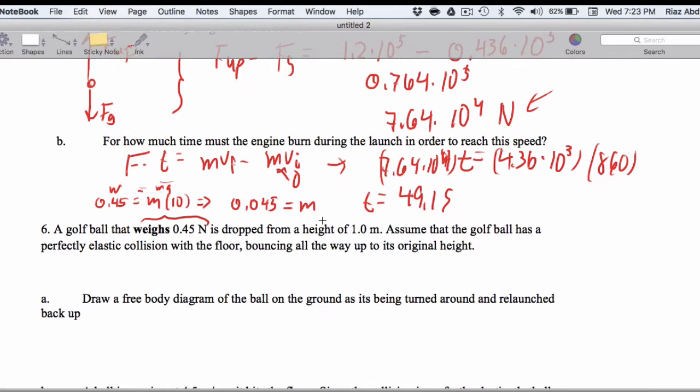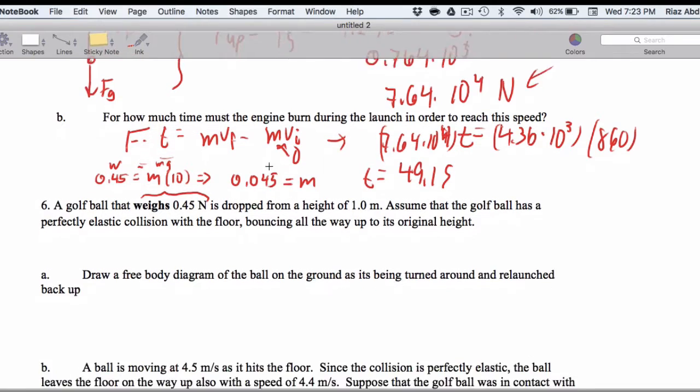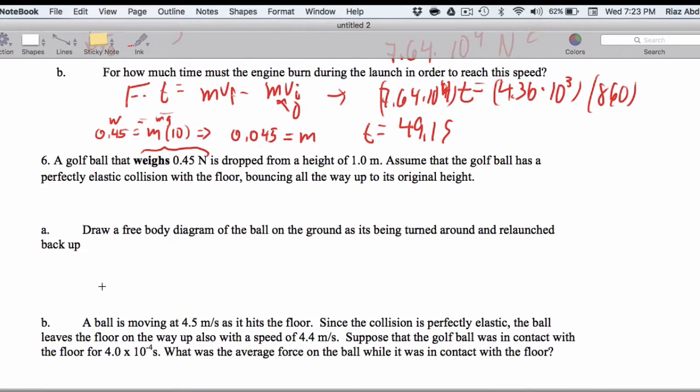So it says, assume the golf ball has a perfectly elastic collision with the floor, bouncing all the way up to its original height. So a free body diagram of the ball smushed on the floor, launching up. Since it's able to launch up, we know the normal force is bigger than the weight force.